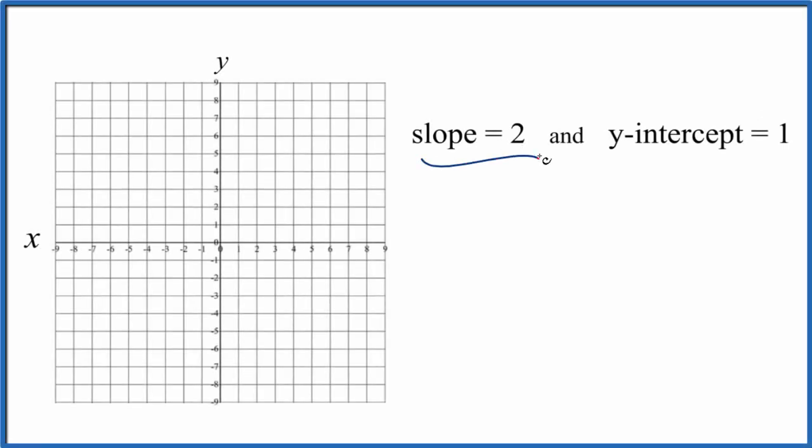Let's write the graph when we have slope of 2 and a y-intercept of 1. And we'll also write the equation out for slope 2, y-intercept of 1.